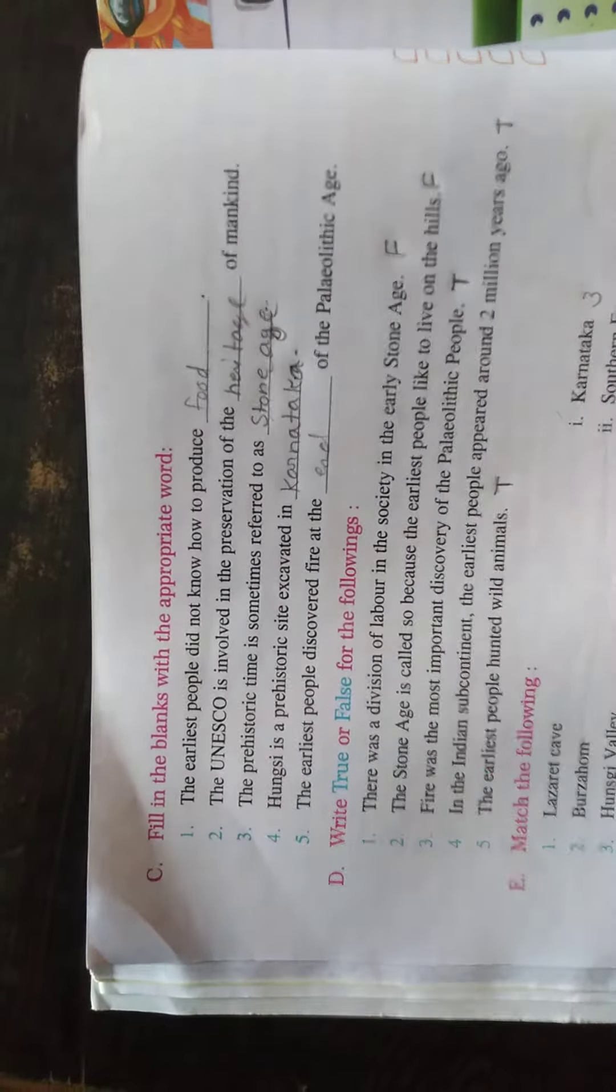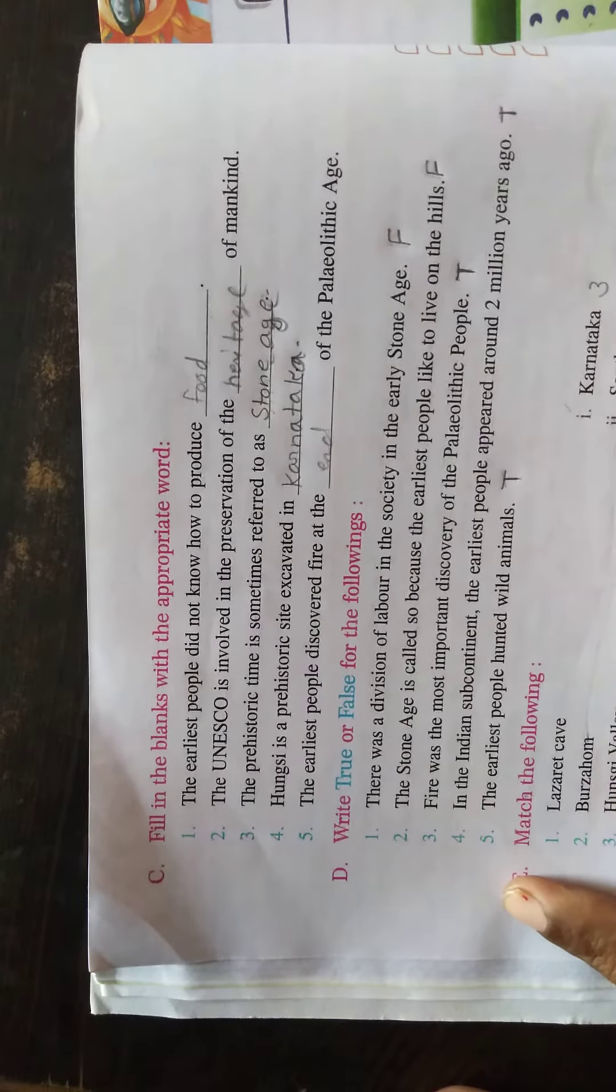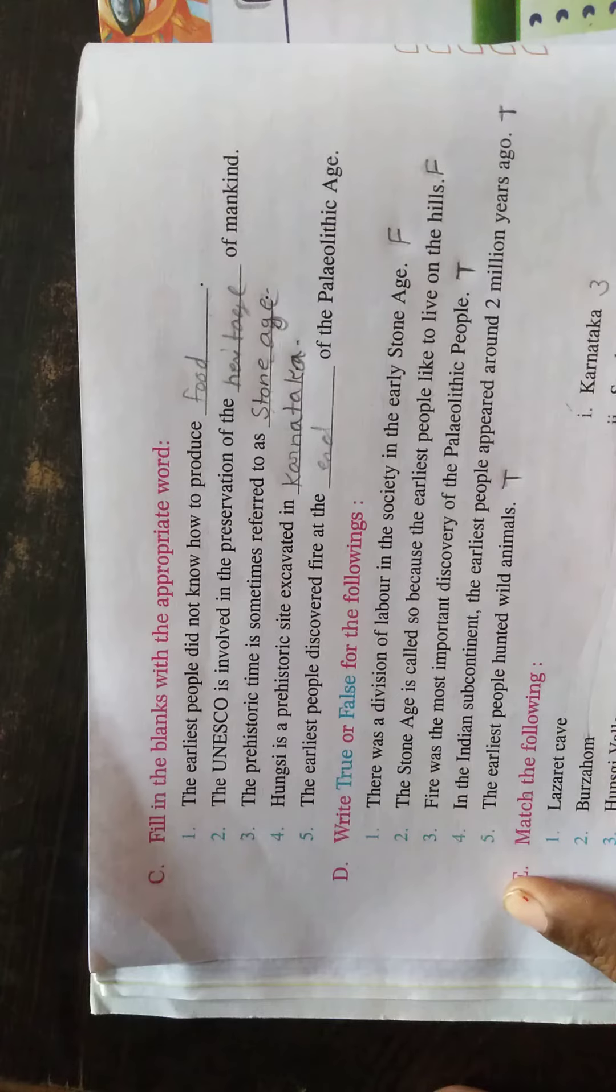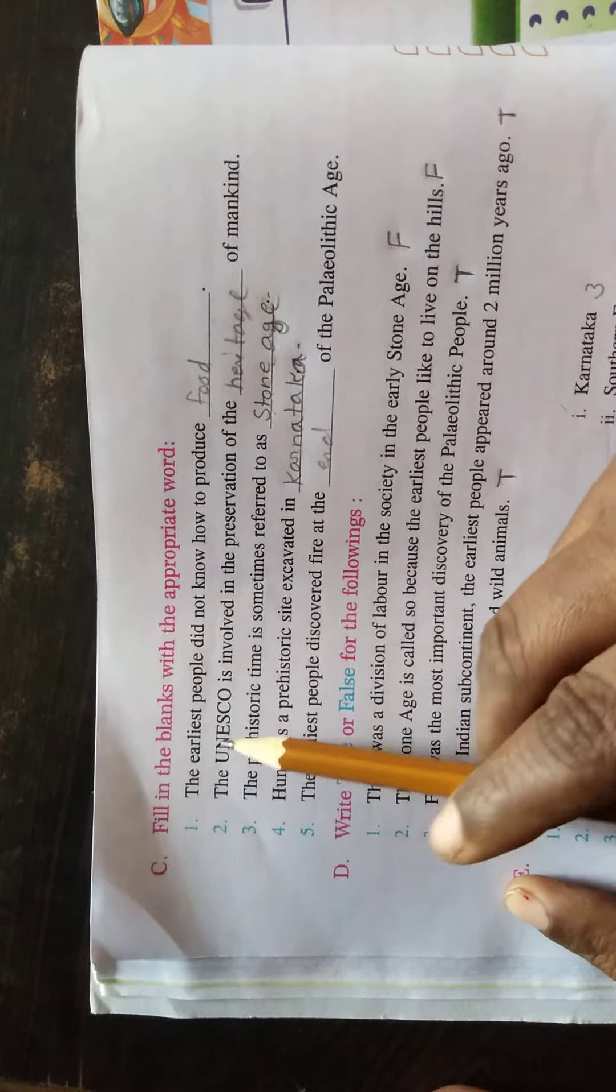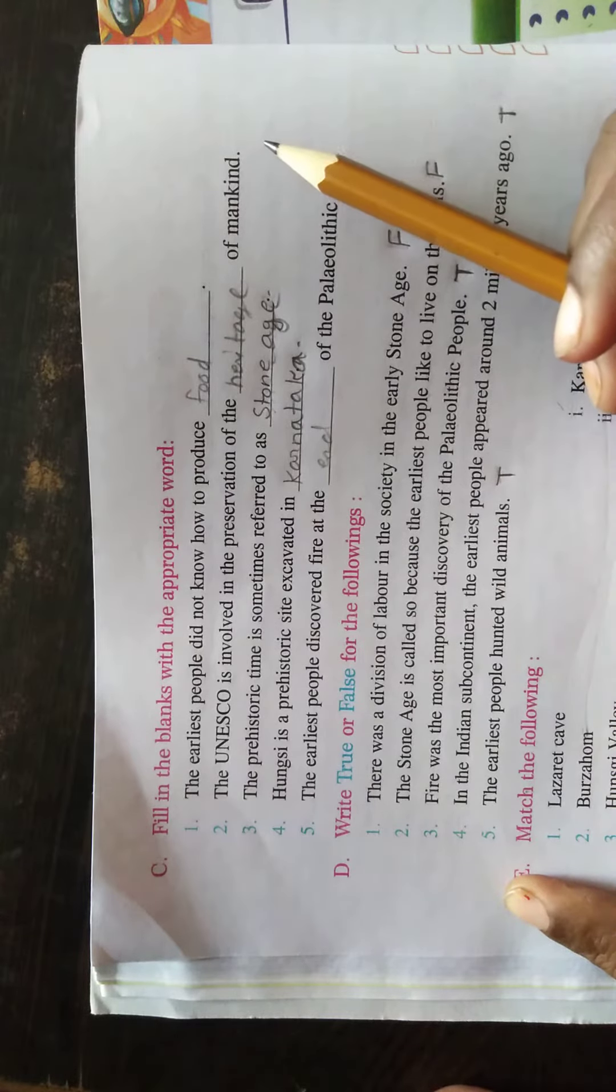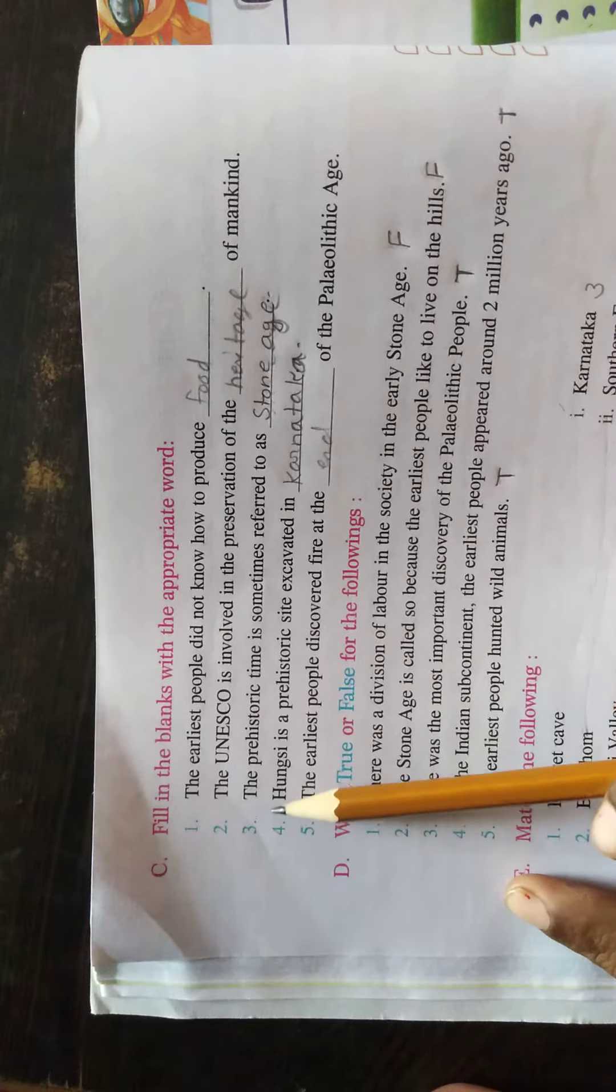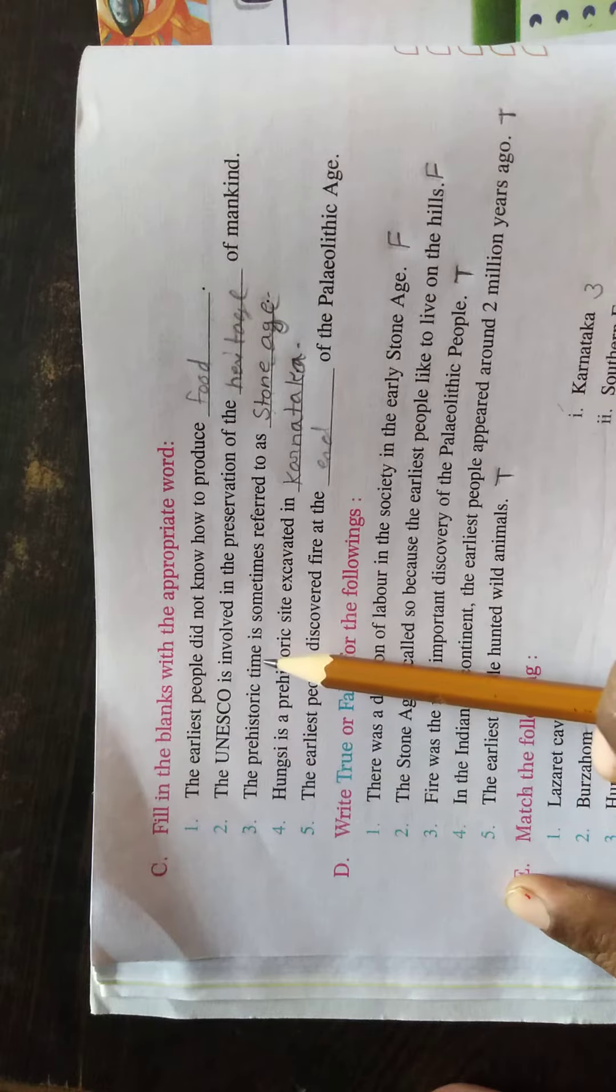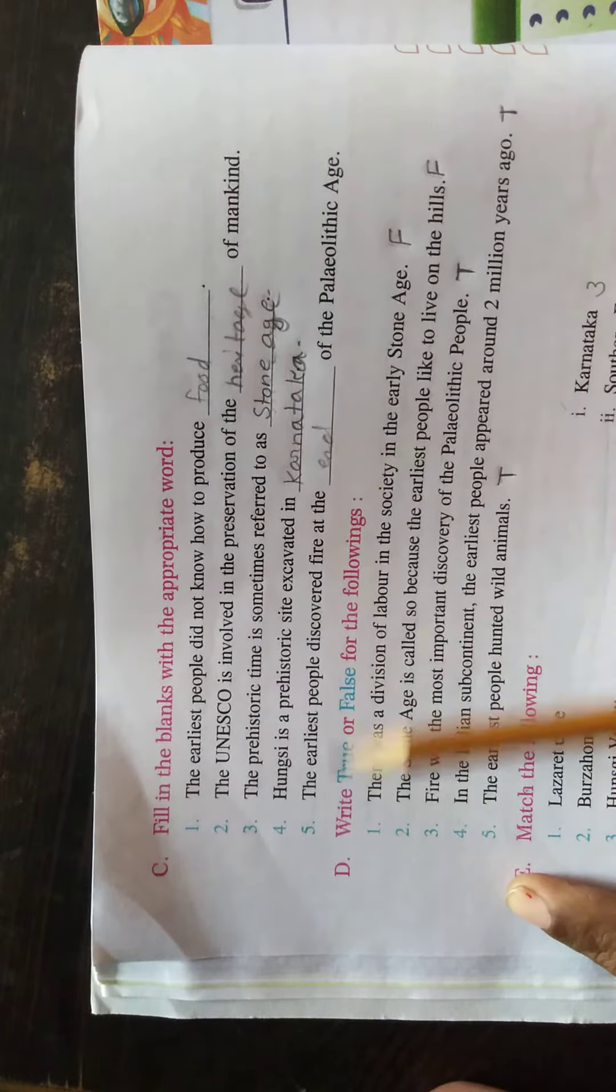Next step can fill in the blanks. The earliest people did not know about how to produce food. First, UNESCO is involved in the preservation of heritage of mankind. Third, the prehistoric time is sometimes referred to as Stone Age.